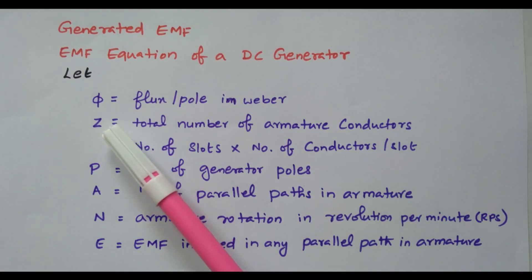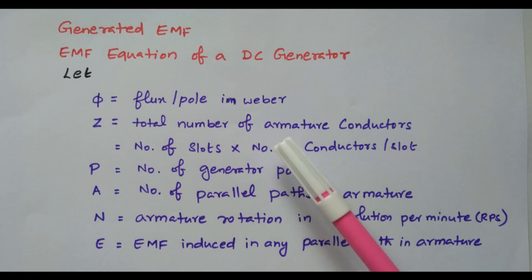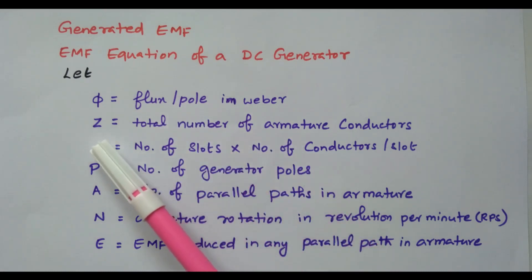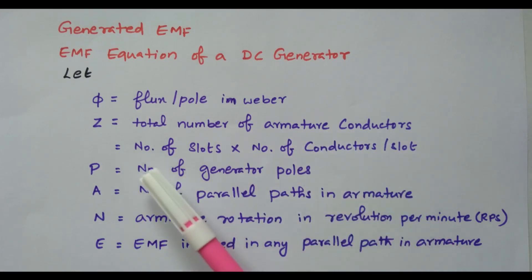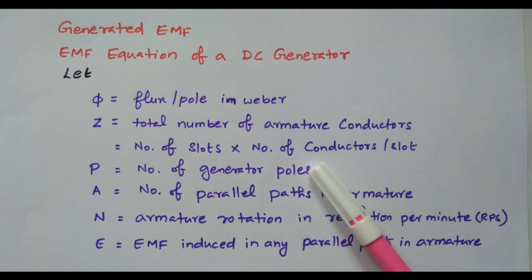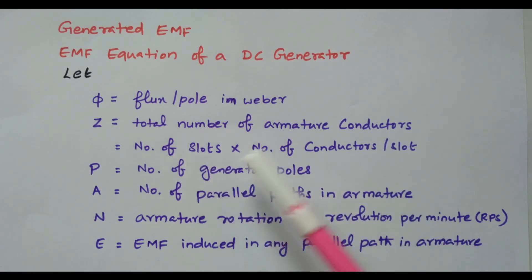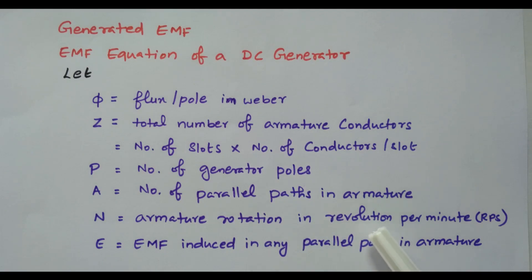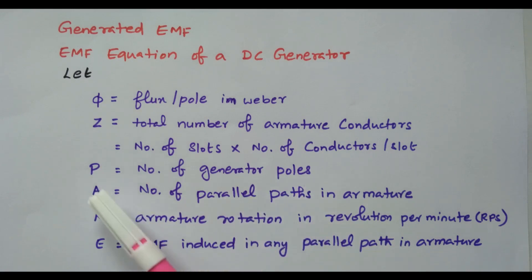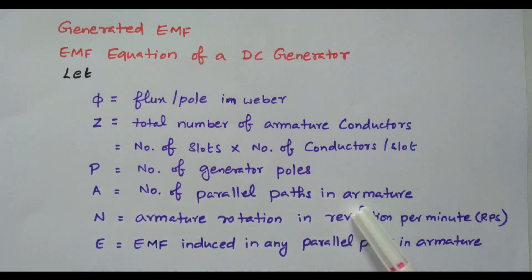First we will see what are the parameters available. φ is the flux per pole, the unit is Weber. Z is the total number of armature conductors — that is number of slots multiplied by number of conductors per slot. P is the number of generator poles; during manufacturing itself, this number of poles will be decided. A is the number of parallel paths available in the armature.